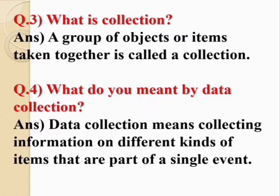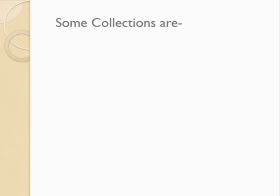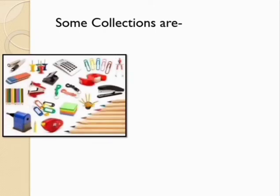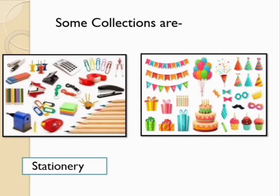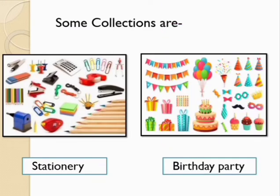Here are some collections. Number one: the collection of stationery. These are objects which we get from the stationery. Number two is the birthday party. These things or objects we can see in the birthday party.